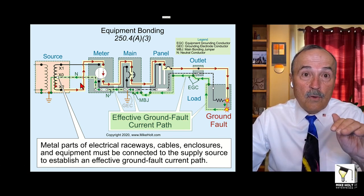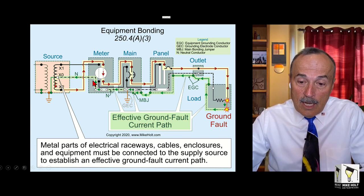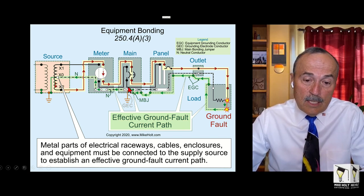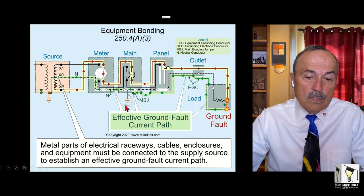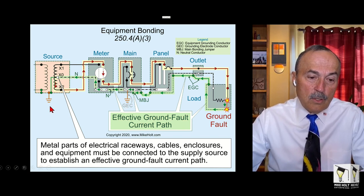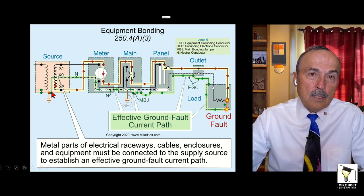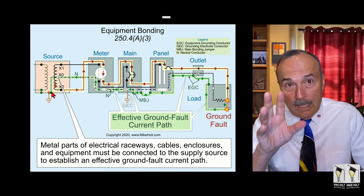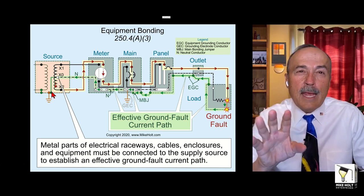We see electrons as that fault current returning here. The electrons, the fault, the ground fault current is not going to the ground rod and going across the earth and then coming back up.